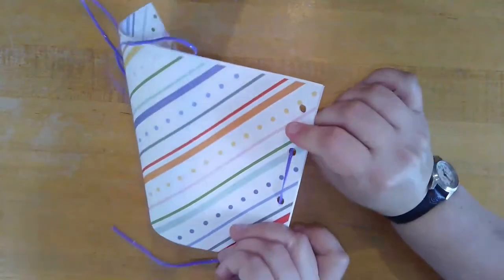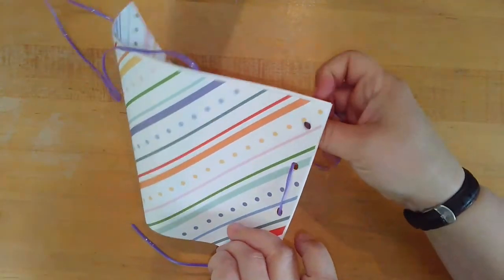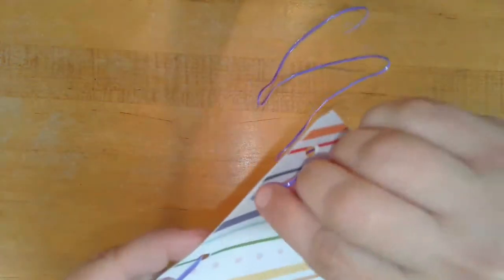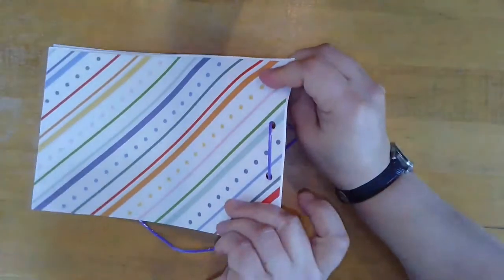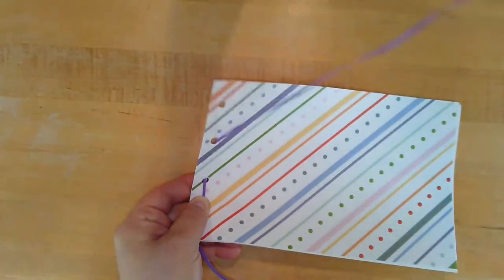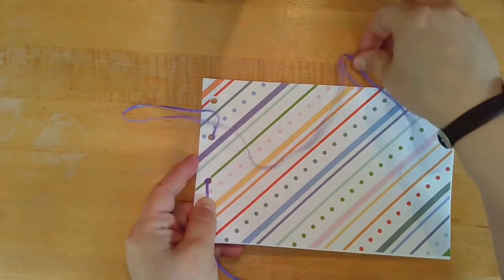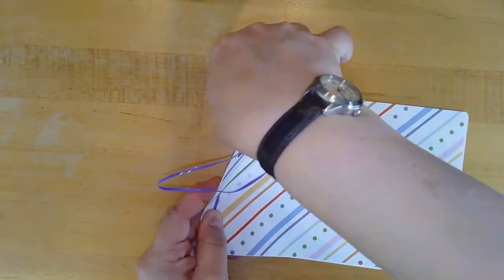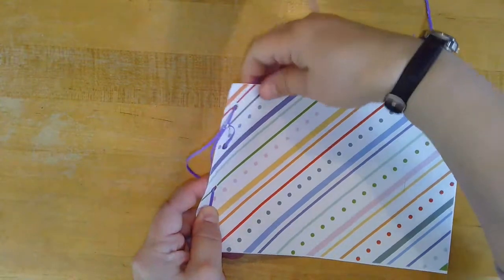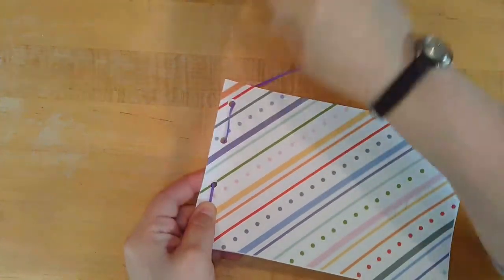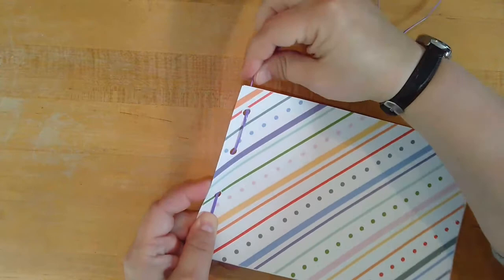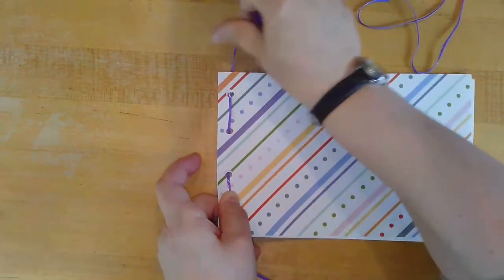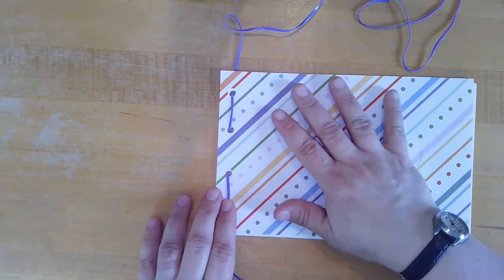Again, making sure that it's laying flat. The jelly string likes to twist. Once you've got it flattened out, you're going to take your string and go through the top hole from the front. Pull it all the way through, nice and tight. Making sure it's laying flat.